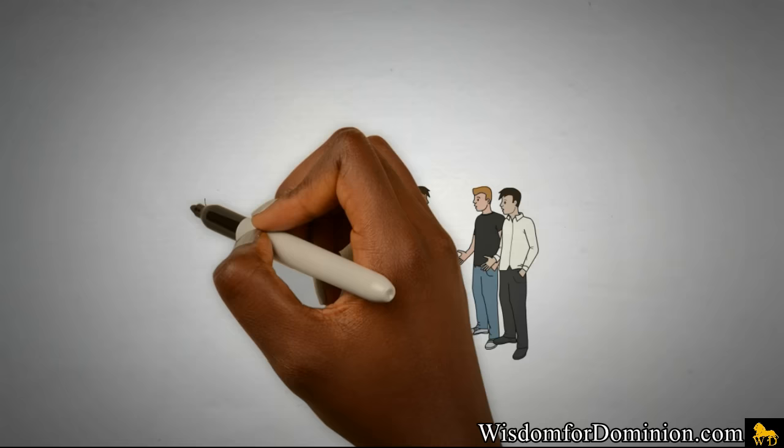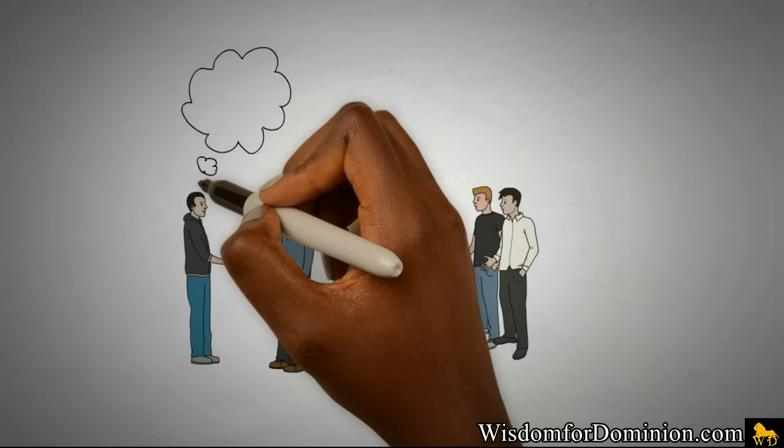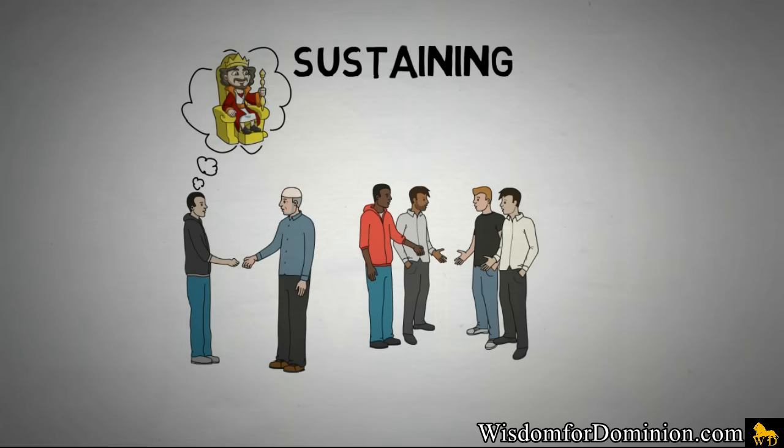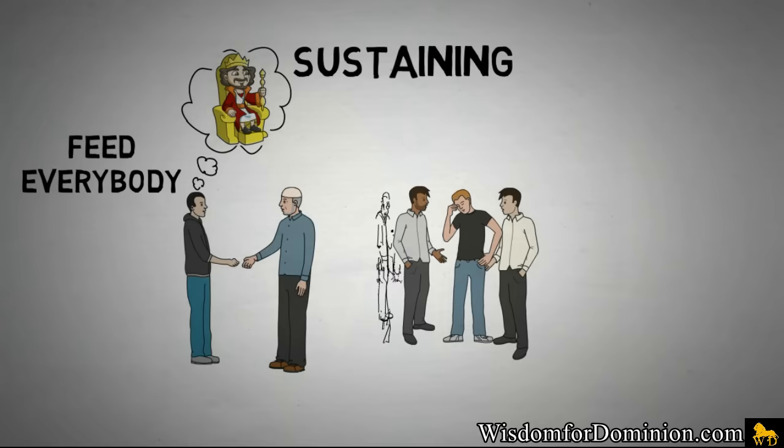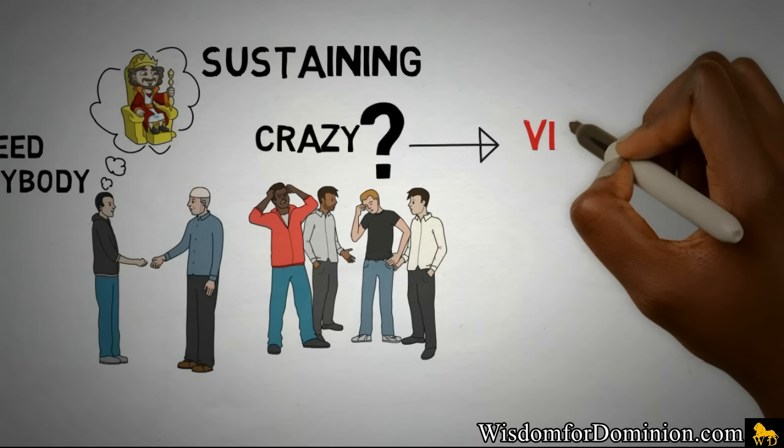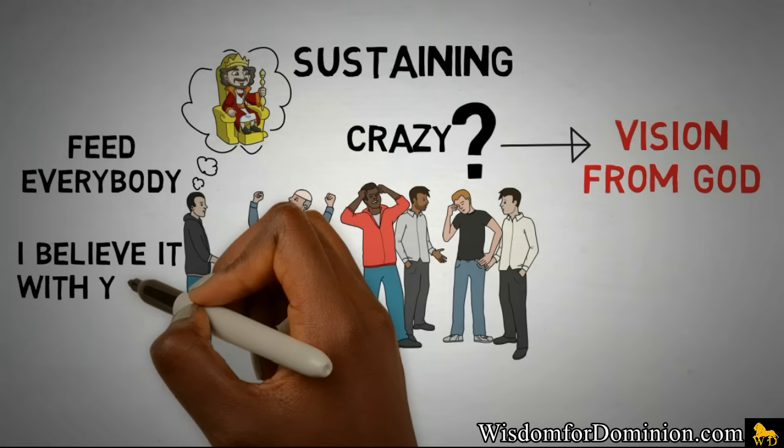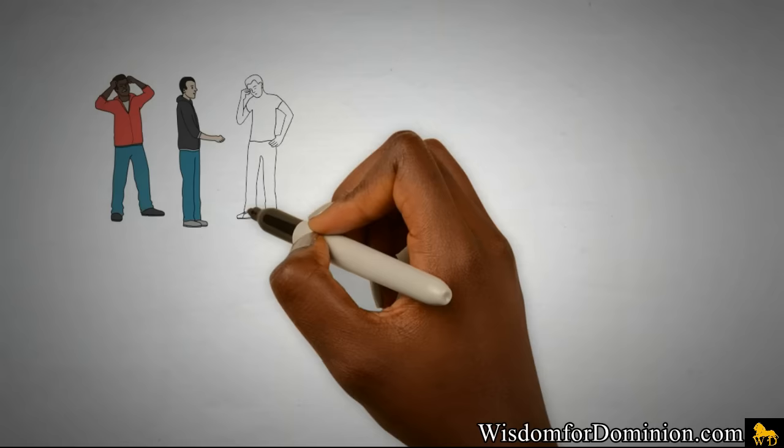Joseph went and told his daddy: I saw myself sitting on the throne, you and all my brothers were kneeling before me, and I was sustaining you. I'm the youngest in the family and I'm gonna feed everybody. His brothers say, are you crazy? If they don't think you're crazy, it's not a vision from God yet. His father says: son, if that's what you see, I believe it with you.